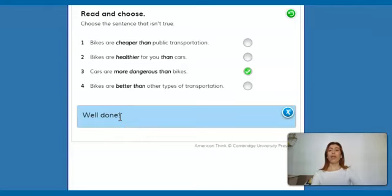That's it. And then, what else can we see here? We can see that when we have a long word like dangerous, we use more. And also, when we compare two things like bikes and transportation, bikes and cars, cars and bikes, bikes, types of transportation, we always use this word THAN. Cheaper than, healthier for you than, more dangerous than, and better than. So, this is for us to understand a little bit more how to use the comparatives. Let's move on now to the next activity.